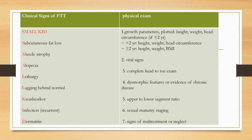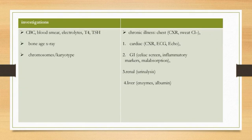Physical exam includes growth parameters: plotted height, weight, and head circumference. If less than 2 years, look for height, weight, and head circumference. Greater than or equal to 2 years: height, weight, and BMI. Also include vital signs, complete head-to-toe exam, dysmorphic features or evidence of chronic disease, upper to lower segment ratio, sexual maturity stages, and signs of maltreatment or neglect.